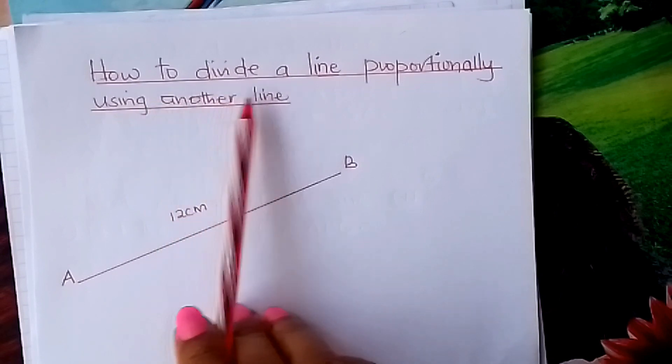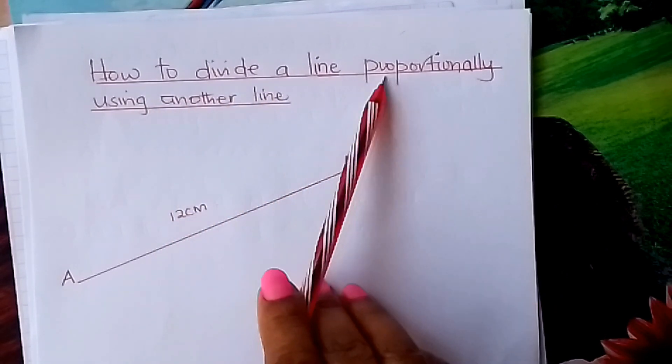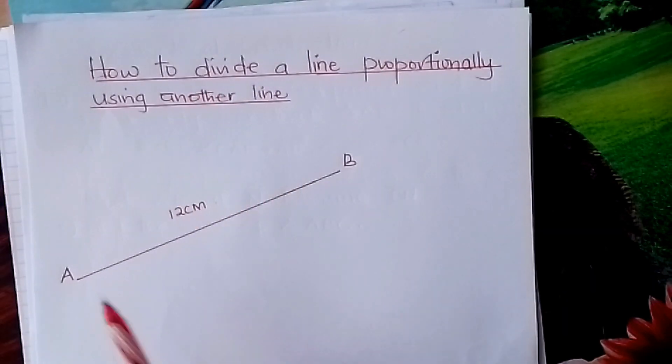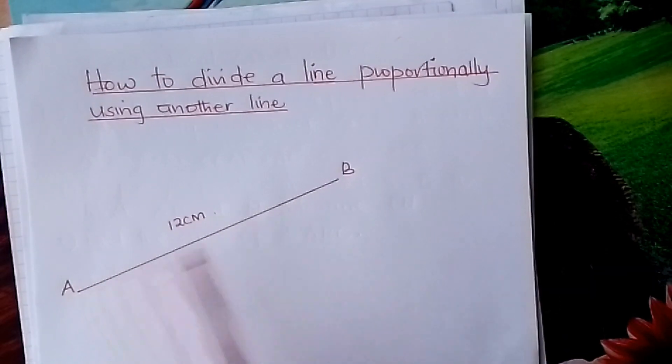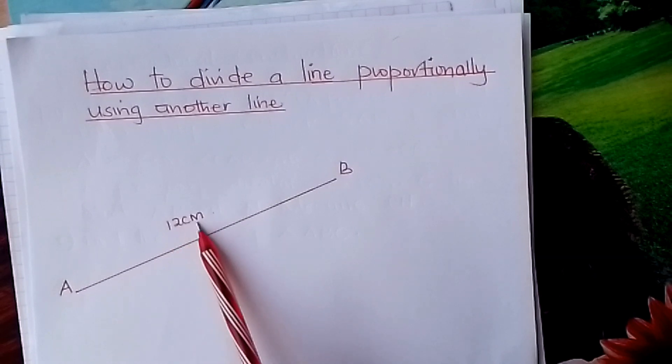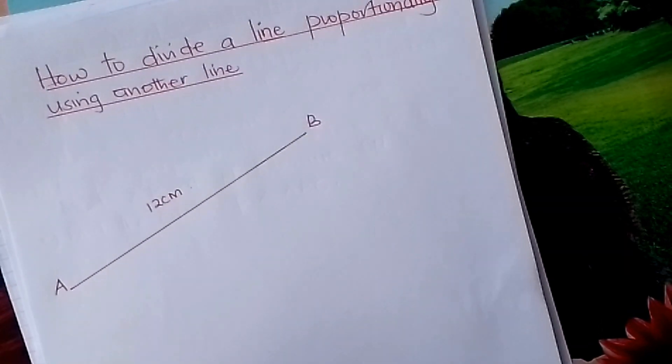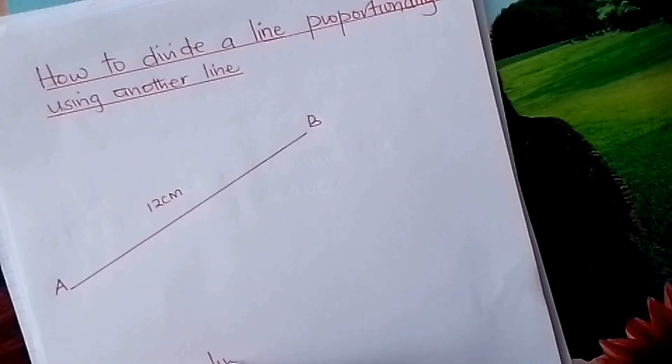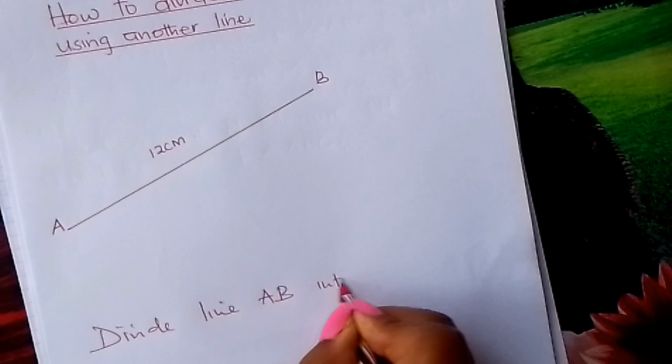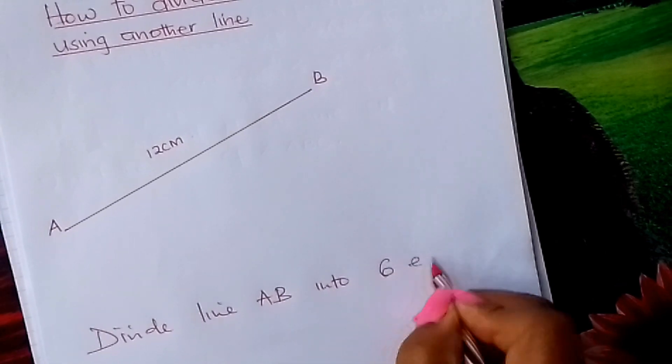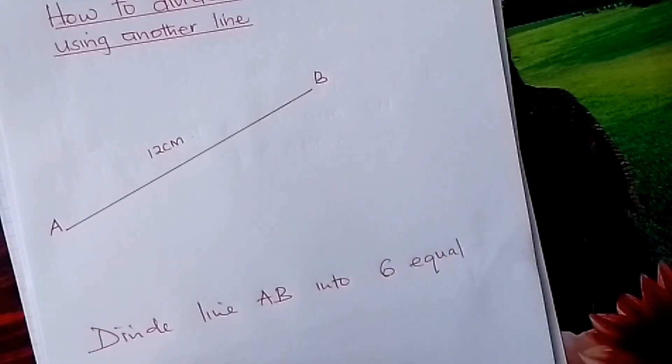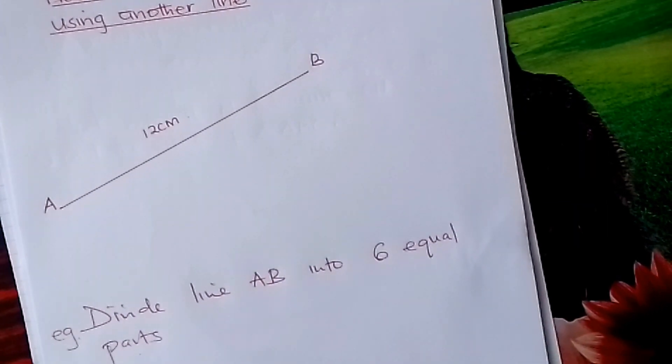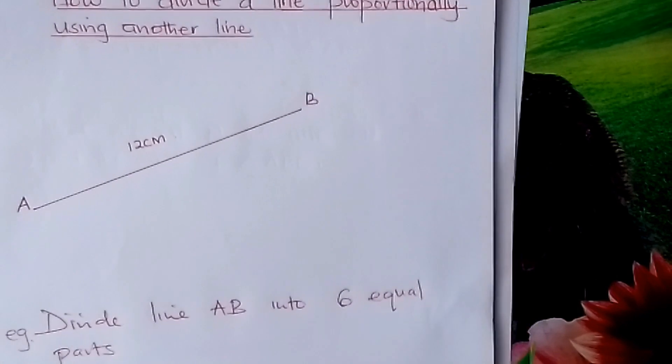Suppose we have this line AB which is 12 cm and we are told, for example, to divide line AB into 6 equal parts using another line. How do you go about it?